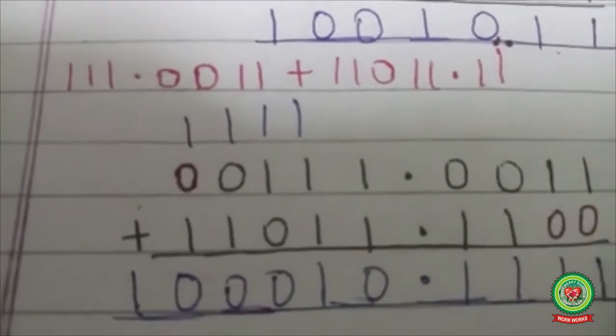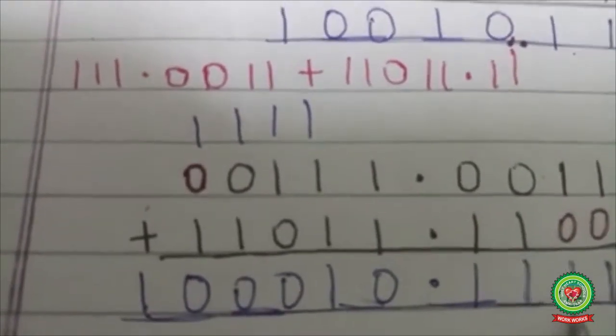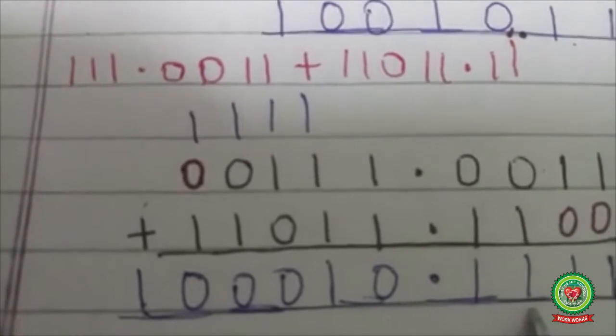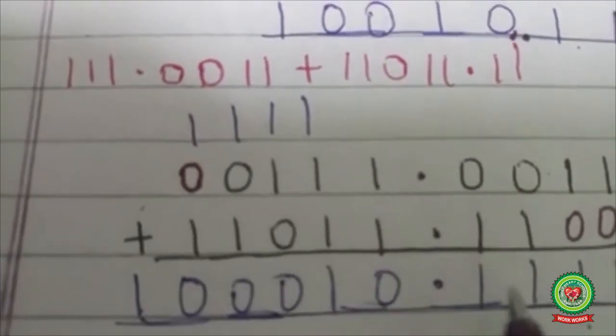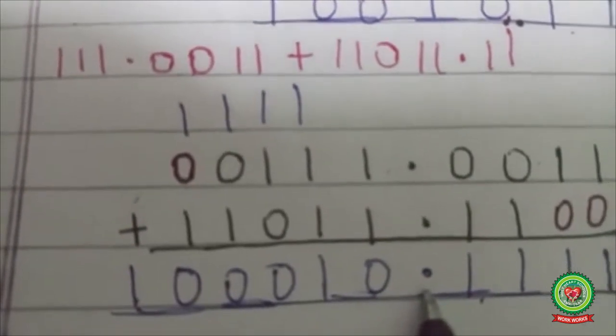Now 1 plus 0 is 1, 1 plus 0 is 1, 0 plus 1 is 1, and the decimal point will remain in its position.